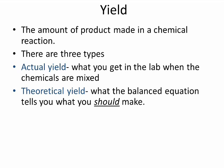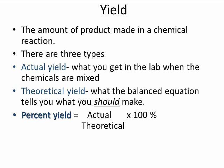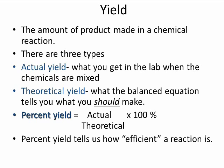Theoretical yield is what the balanced equation tells you you should make. We have our chemical reaction, and what we were doing previously — calculating the product in grams through stoichiometry — that's theoretical yield. That's what we think we should make. Percent yield is the actual yield over theoretical times 100, and that tells us how efficient the reaction is.